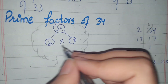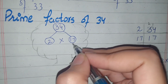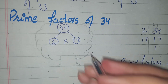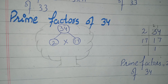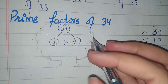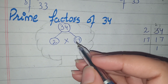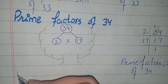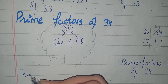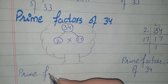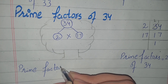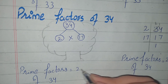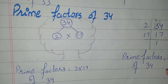Now, 2 is not further separable. 17 is also not further separable because 17 is a prime number. Since 17 cannot be separated further, it is a prime number. We write it here. The prime factors of 34 is equal to 2 multiplied by 17.